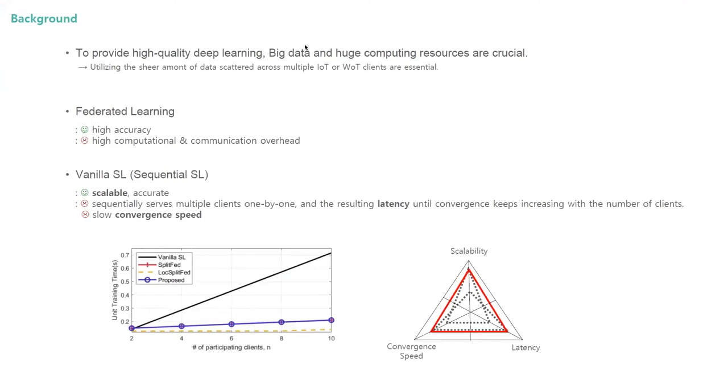Big data and huge computing resources are essential in enabling high-quality deep learning. In this respect, the indispensable elements are the utilization of massive data and provision of large-scale parallel computing power. The sheer amount of Internet of Things or Web of Things clients are great sources of these two elements. They collectively provide a huge volume of data and high parallel computing power.